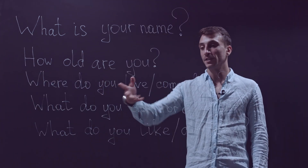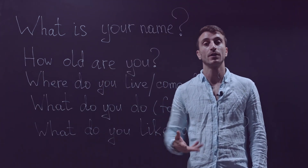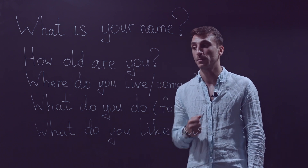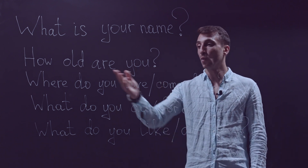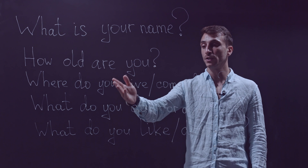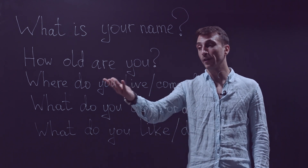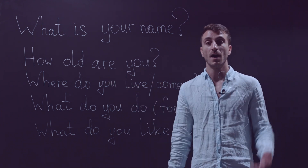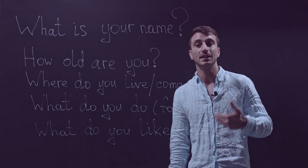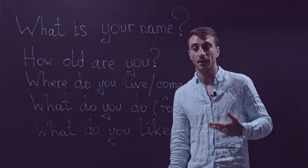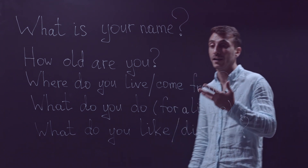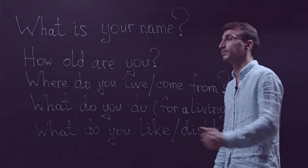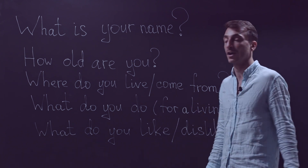Next is the origin or the place that person comes from. Where do you live? Or where do you come from? I live in Armenia. I am from, let's say, Paris.